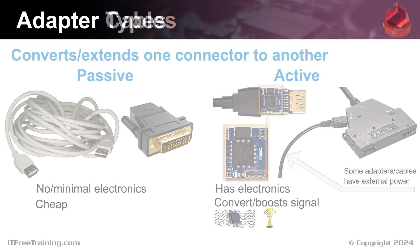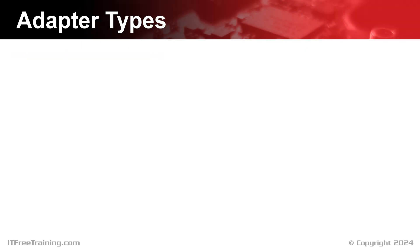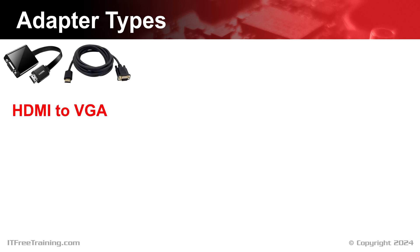Let's have a look at some adapters. There are many different adapters and cables that allow you to connect different connector types together. The first example is HDMI to VGA — the first one is passive and the second one is active. Looking at both, you can't tell which is which. So don't assume if a cable or adapter looks a particular way that it is passive or active.